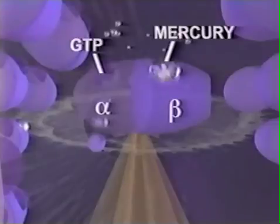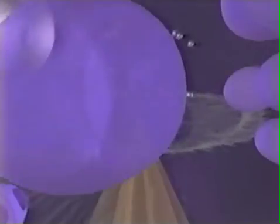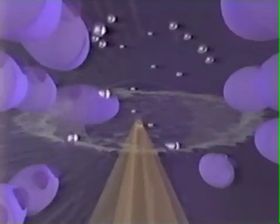Since bound GTP normally provides the energy which allows tubulin molecules to attach to one another, mercury ions bound to these sites prevent tubulin proteins from linking together.